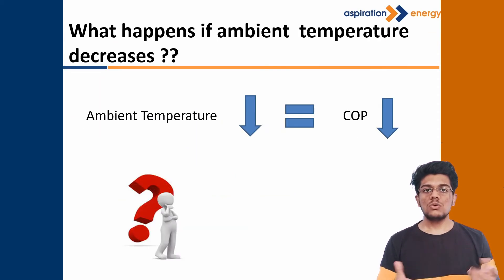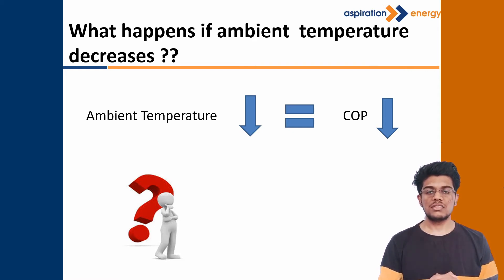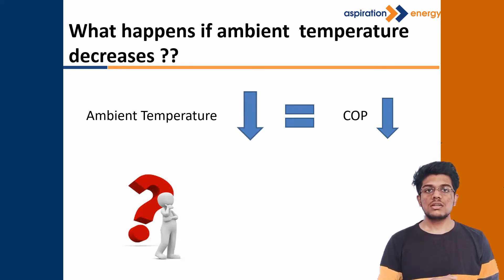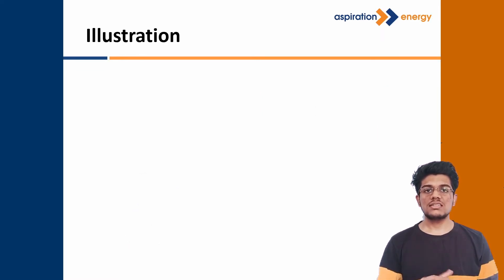Now, the question arises: what happens if the temperature decreases below the design ambient temperature? When the ambient temperature decreases, the COP — or coefficient of performance — of the system also decreases. To understand this, let us consider an example.